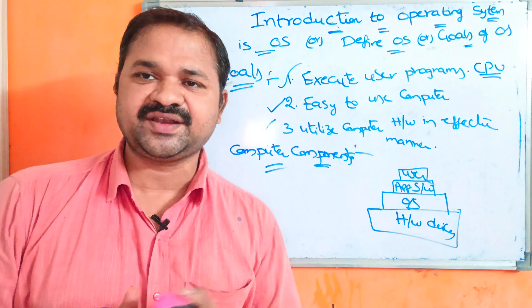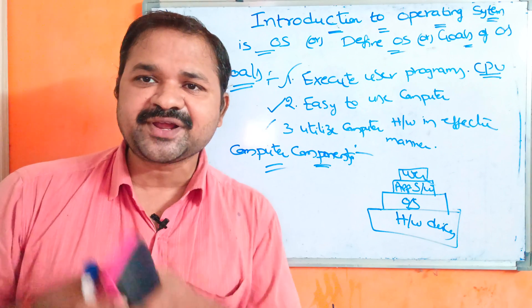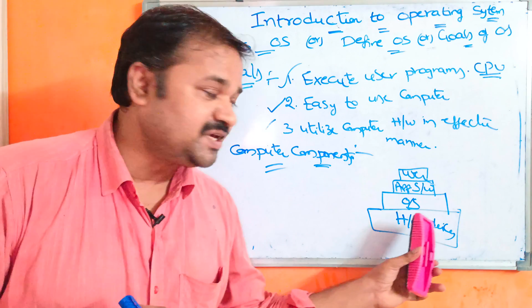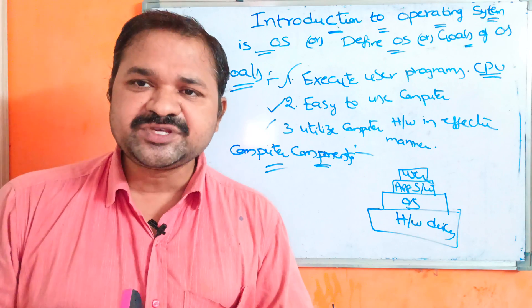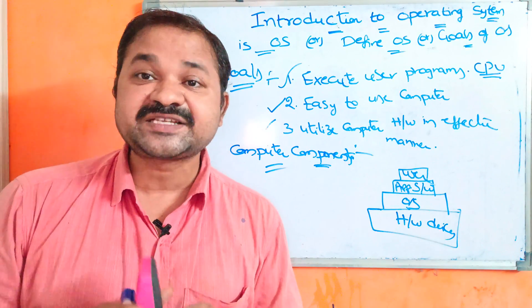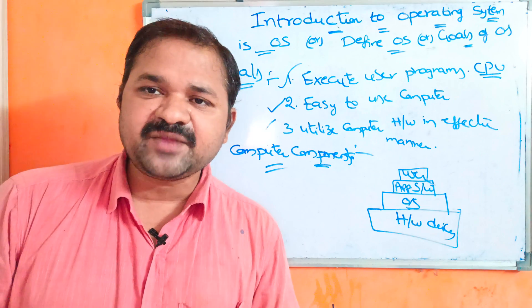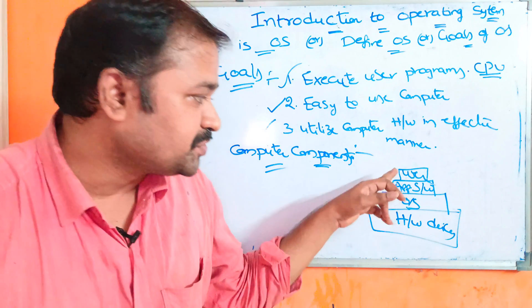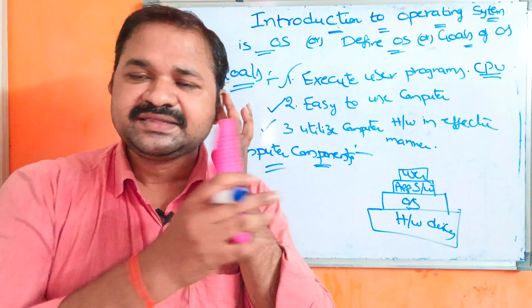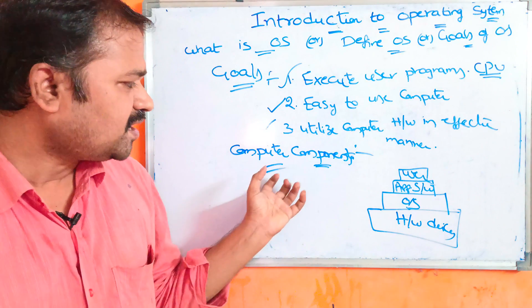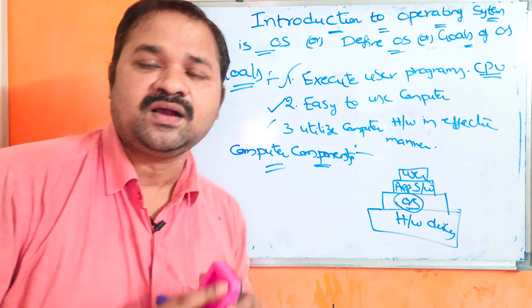Hardware means the physical components present in the computer. We can utilize all those computer components more effectively with the help of the operating system. On top of the operating system we have application software — the programs which are developed by the user according to their requirements. In this subject we will mainly focus on the second component, which is the operating system.